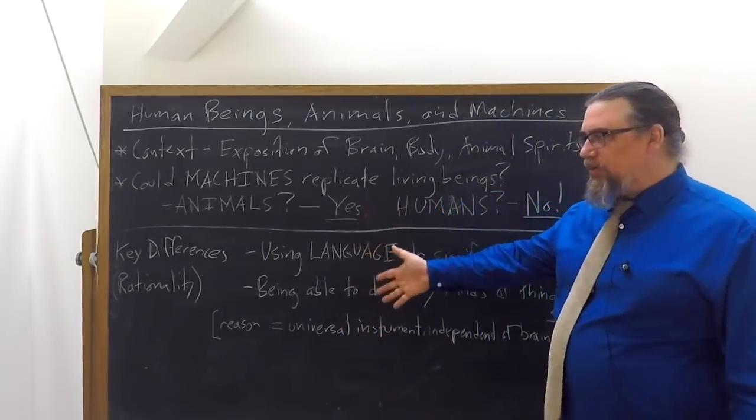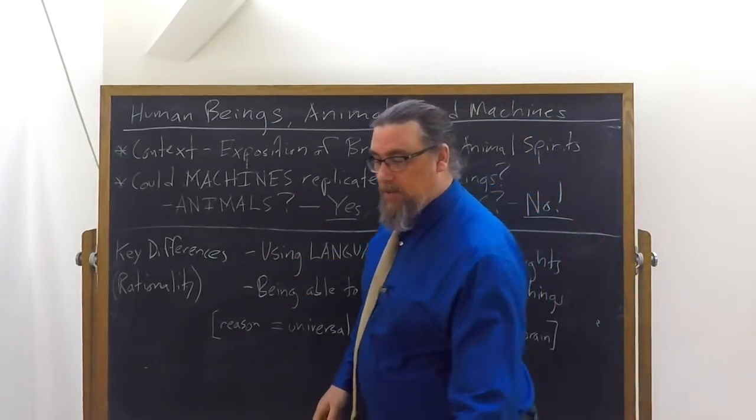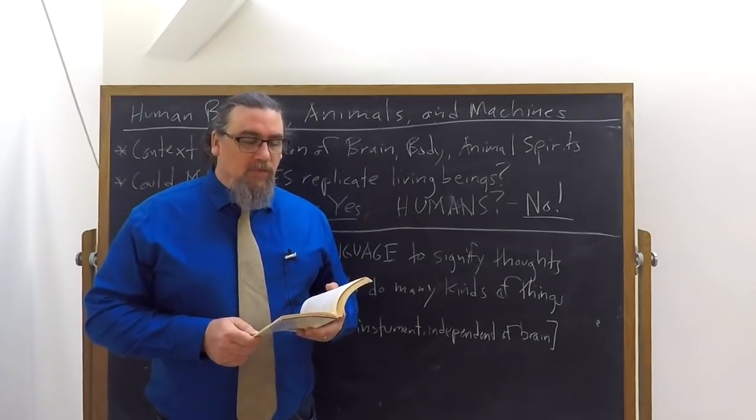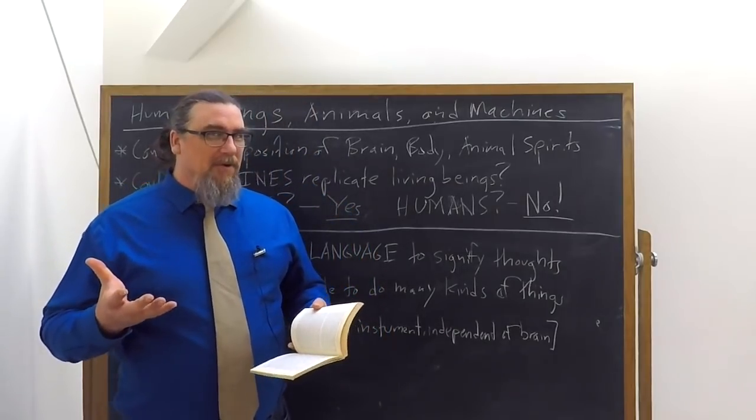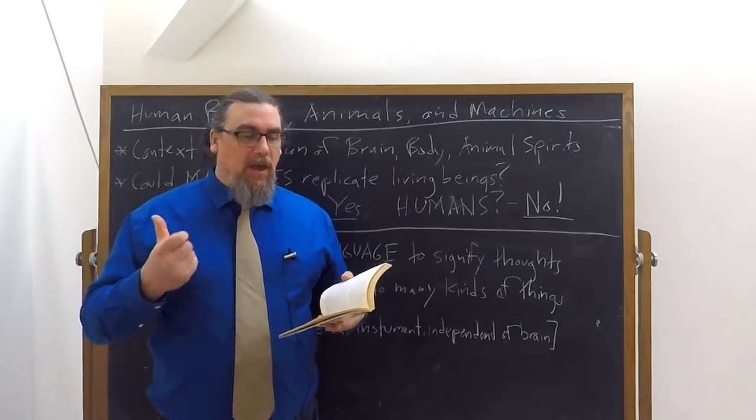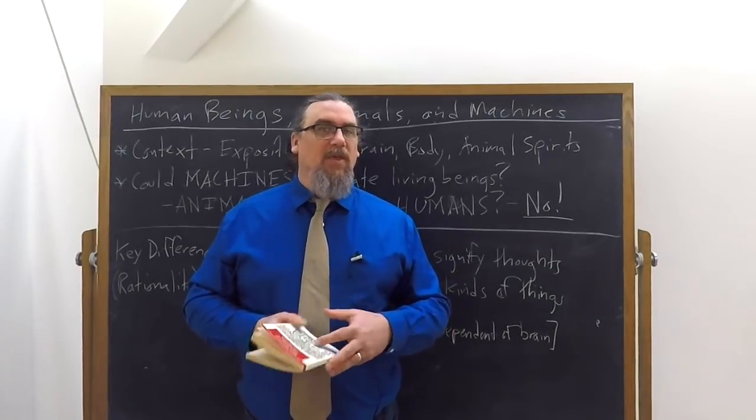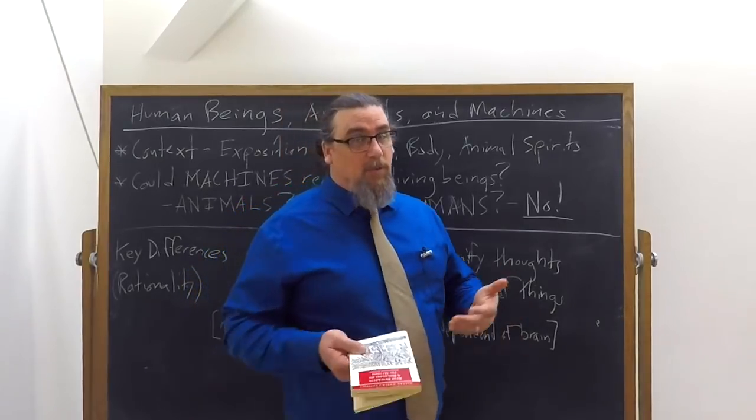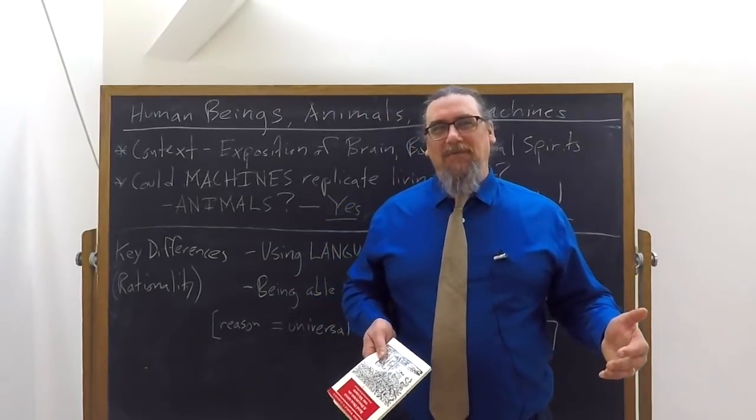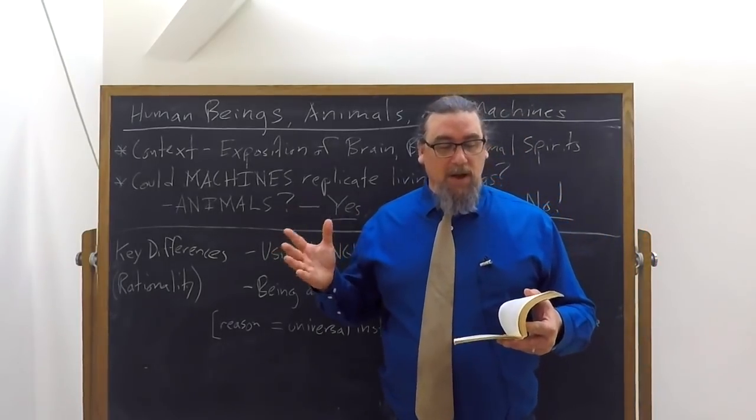He goes on and he says something that really helps to inform all of this. Reason, he says, is a universal instrument. Reason is able to extend to, in theory, just about anything that we human beings can come across. He says, reason is a universal instrument which can operate in all sorts of situations. Machines, however, whether we think about it in terms of organs or programming, are designed for certain things. It's practically possible for there to be enough different organs in a machine to cause it to act in all life's occurrences in the same way that our reason causes us to act.